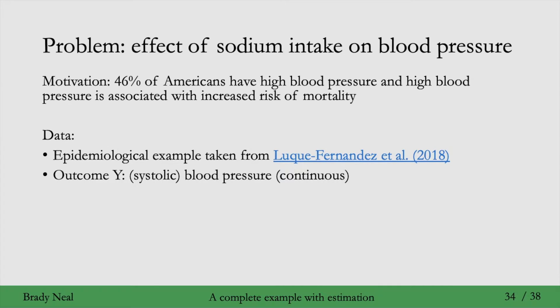The outcome is systolic blood pressure, which is a continuous variable. The treatment is sodium intake, which is also continuous, but we will binarize this to 1 if it's above 3.5 mg and 0 if it's below. This binarization turns out to not be important for this example because we would get the exact same answer if we kept it as continuous. It's just a bit simpler to show if we binarize it.